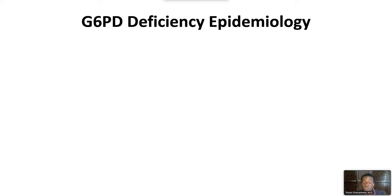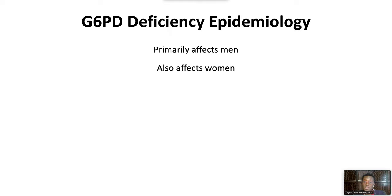G6PD deficiency is the most common enzymatic disorder of red blood cells, affecting over 400 million people worldwide. The gene for G6PD deficiency is on the X chromosome, so it primarily affects men with the XY karyotype. It also affects women with the XX karyotype who are homozygous through inactivation of one X chromosome, or those with Turner syndrome with the XO karyotype. G6PD provides a survival advantage against Plasmodium falciparum, and is therefore more common in historically malaria endemic regions, affecting persons of African, Asian, Mediterranean, and Middle Eastern descent. There is great variation in disease severity.